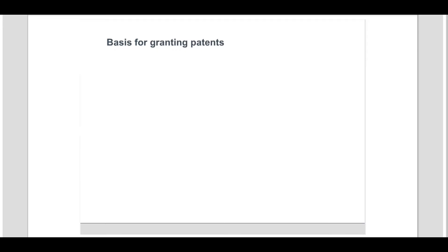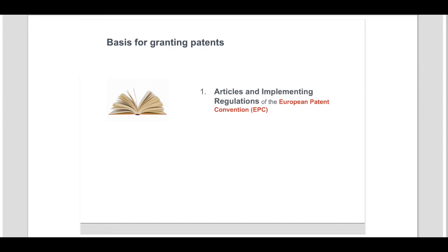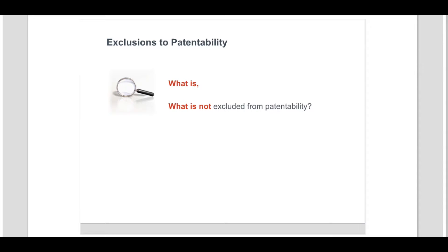The legal basis for granting patents for computer-implemented inventions by the European Patent Office is given by the Articles and Implementing Regulations of the European Patent Convention, and its interpretation through the case law of the Boards of Appeal of the EPO. In Europe, certain subject matter and activities are excluded altogether from patentability. We will now look at what is and what is not excluded from patentability in the field of information technology by reference to the EPC and relevant case law of the EPO Boards of Appeal.